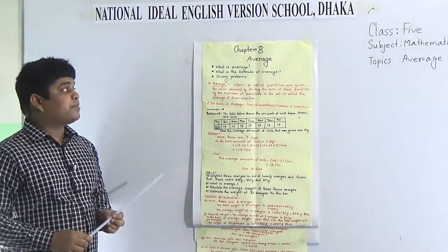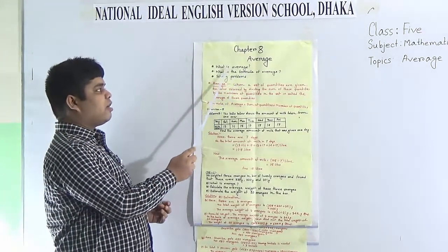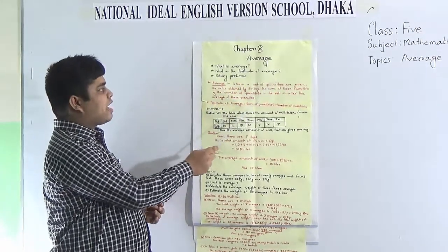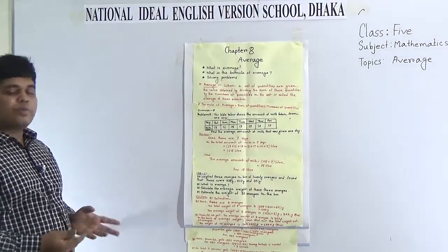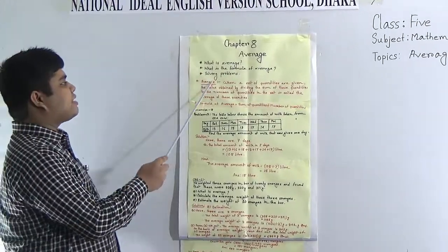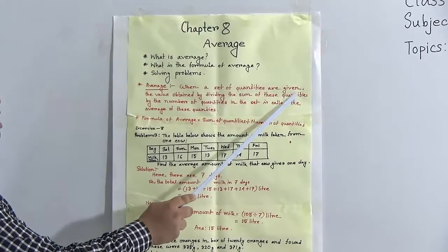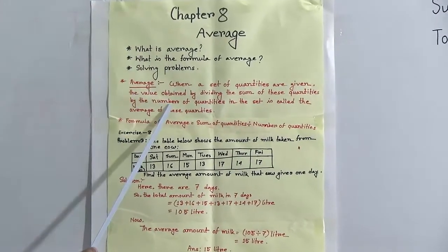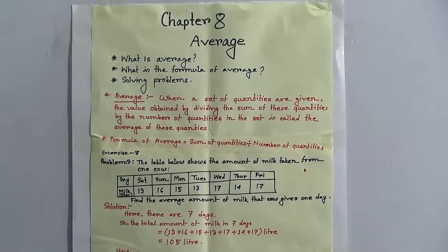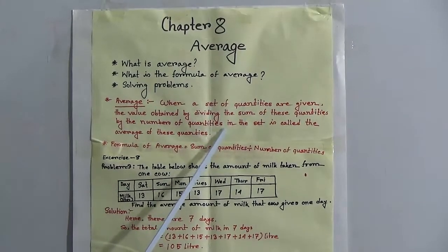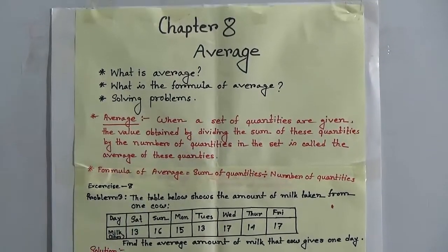After completing this chapter, we will be able to learn what is average, what is the formula of average, and solving problems. Now let us start. What is average? When a set of quantities are given, the value obtained by dividing the sum of these quantities by the number of quantities in the set is called the average of these quantities.